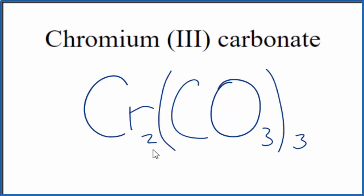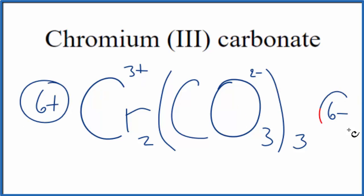Let's check our work, though. So we said chromium, that is 3 plus, and the whole carbonate here, this whole thing, is 2 minus. So we have 3 times 2 minus, that's 6 minus, 2 times 3 plus, that's 6 plus. So these numbers, they add up to 0. We have a net charge of 0.